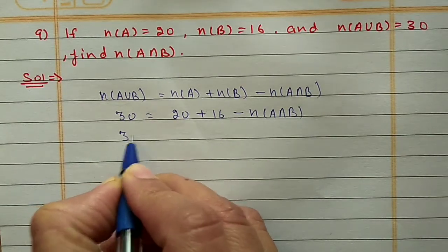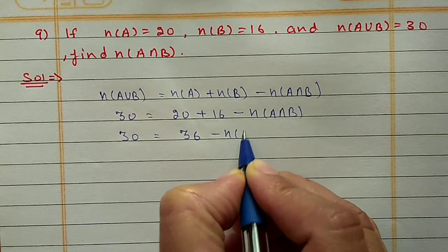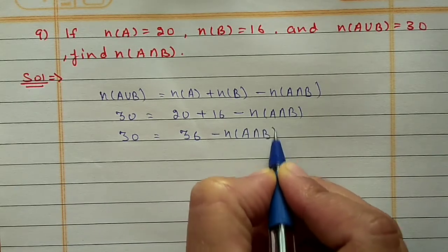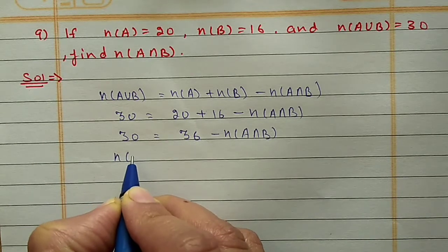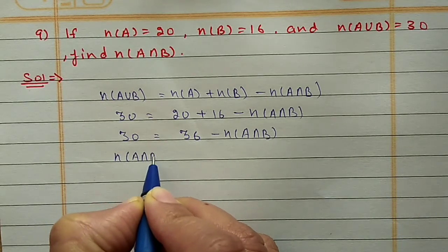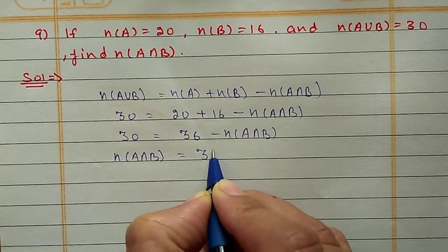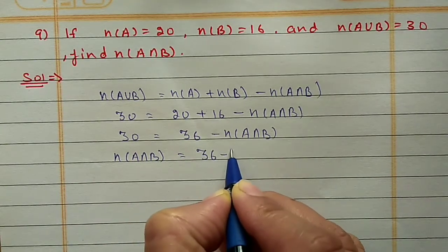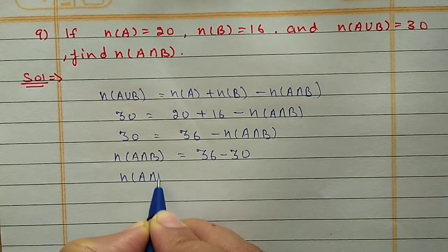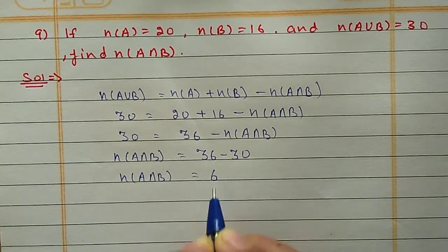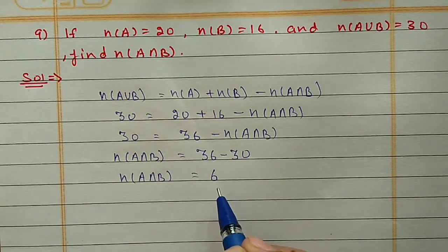So 30 = 36 - N(A∩B). Shifting N(A∩B) to the left side it becomes positive, and shifting 30 to the right side gives 36 - 30. So N(A∩B) = 6, meaning A and B have six elements in common.